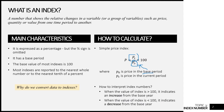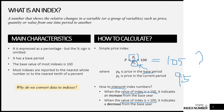Now let's look at how to interpret an index. Whenever the value is more than 100, it indicates an increase. For example, an index of 105 means there's a 5% increase in the price of the item. Whenever the value is below 100, it indicates a decrease. So an index of 95 means the price has fallen by 5%.